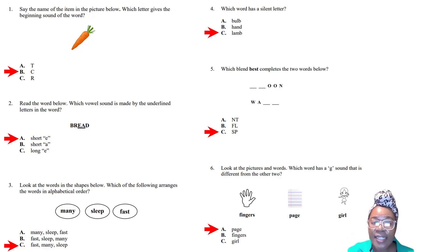Question three: Put those words in alphabetical order. Many, sleep, fast. Many begins with M, sleep with S, fast with F. You look at the first letter of each word. F comes before M, both come before S in the alphabet, so the answer is C.